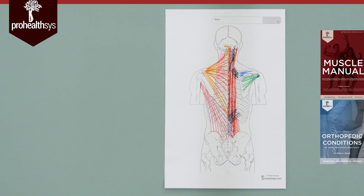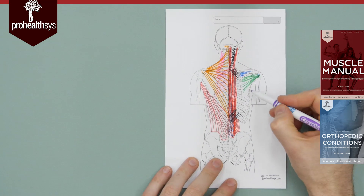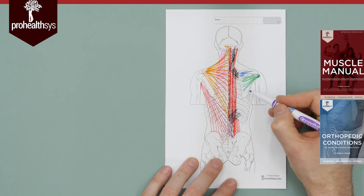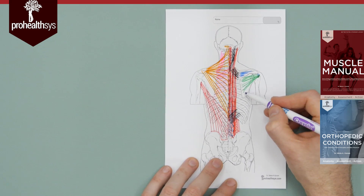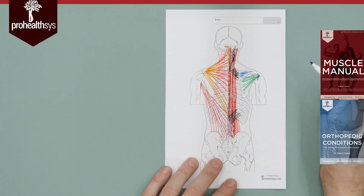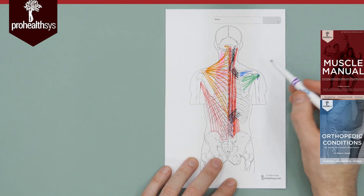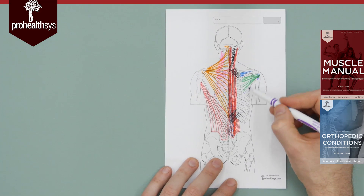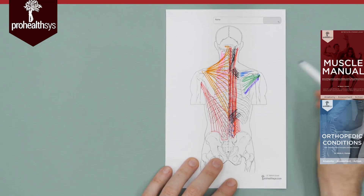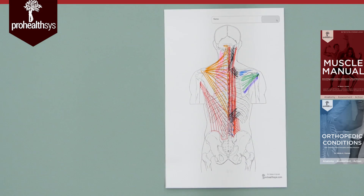The main action of infraspinatus is lateral rotation. The last rotator cuff muscle visible posteriorly is teres minor, originating from the superior lateral border of the scapula, blending with infraspinatus, and inserting on the inferior facet of the greater tubercle of the humerus. Its action is also lateral rotation.